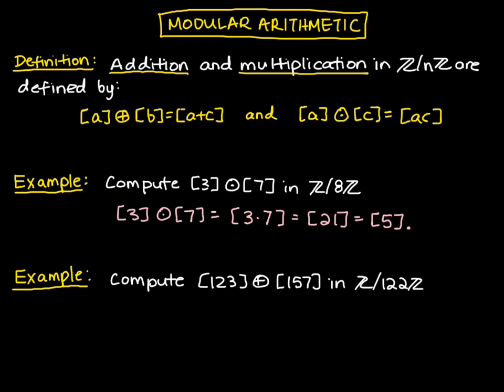Now, let's look at the following example dealing with addition. One thing we can do, note that both 123 and 157 can be simplified, they're equivalent to congruence classes in Z mod 122Z.